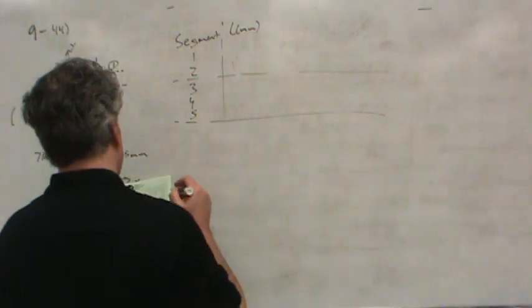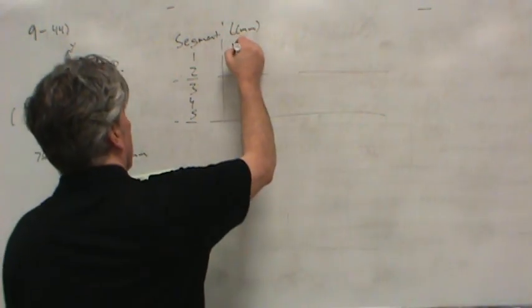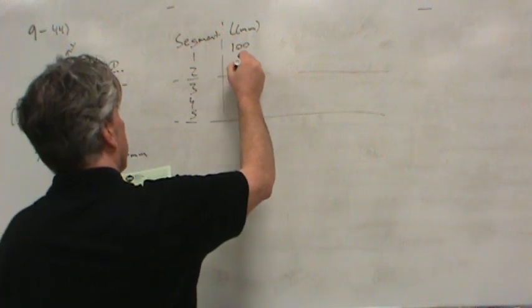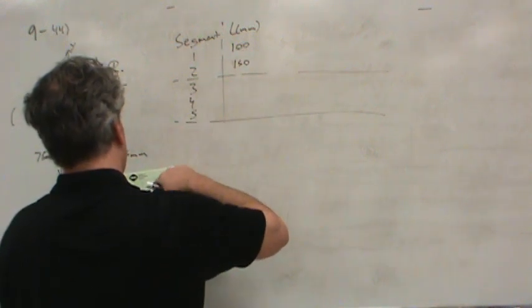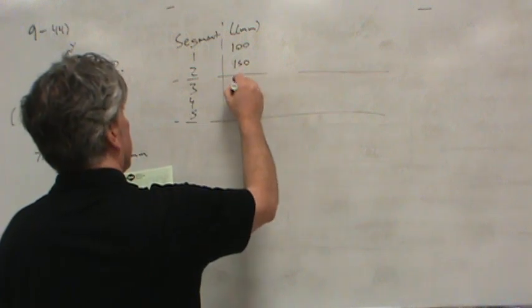So for example, length in millimeters of each line segment is 100, 150, make sure I'm copying the right column.